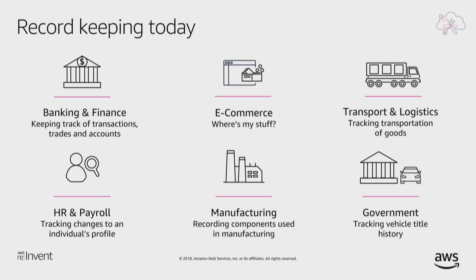For e-commerce, transfer and logistics, it could be the entire history of where something is in a particular process — where that order is, what the inventory looks like, what activity occurred during each state, and knowing none of it was changed or altered. For HR and payroll, it could be paychecks or personal information related to employees — knowing the sequence of events that occurred with a particular employee, that it's never been changed, with a complete history of events. And we'll also brainstorm a DMV scenario for government tracking of vehicle title history.